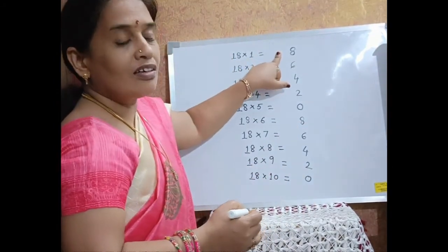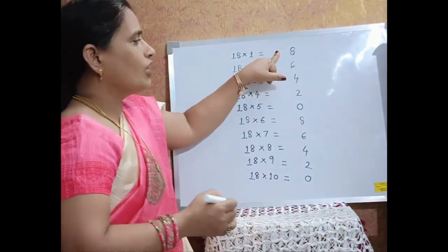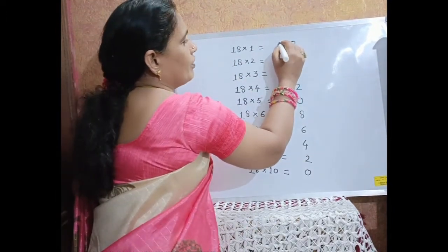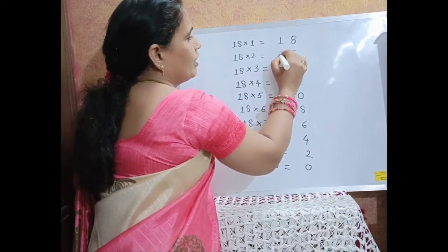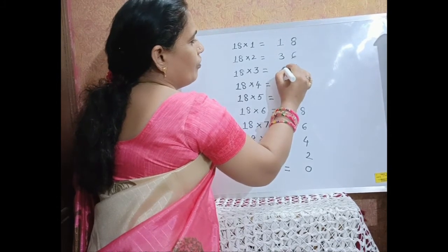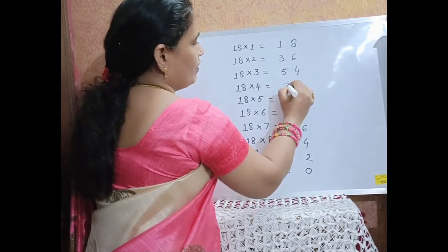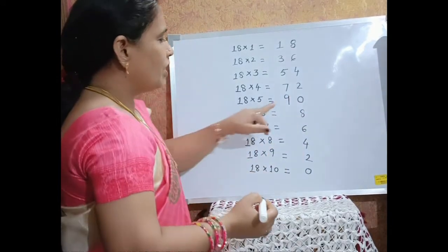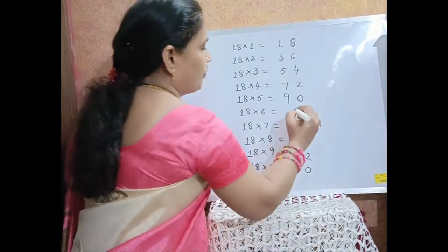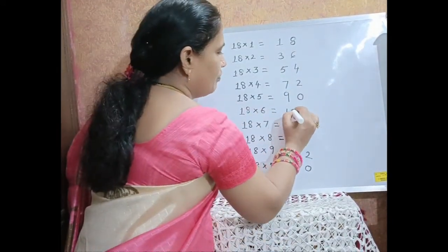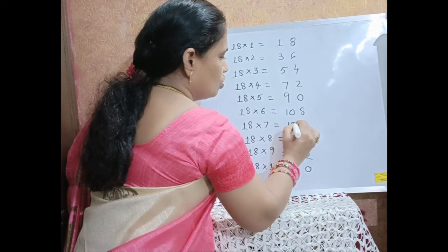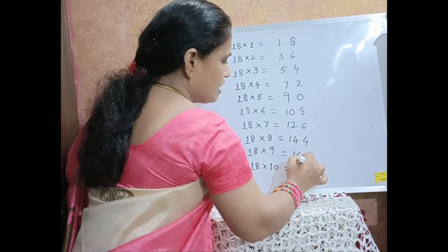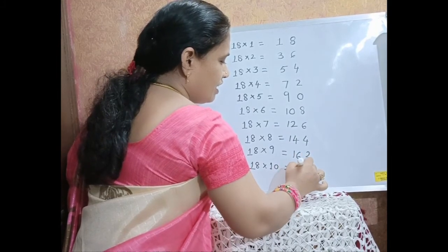For the table of 18, write first 5 consecutive odd numbers: 1, 3, 5, 7, 9, and then continue with even numbers: 10, 12, 14, 16, 18.